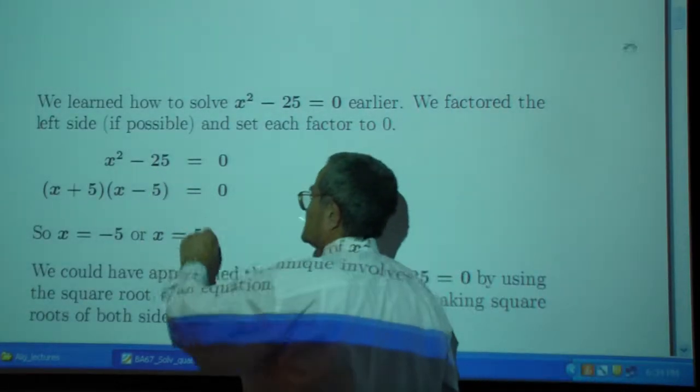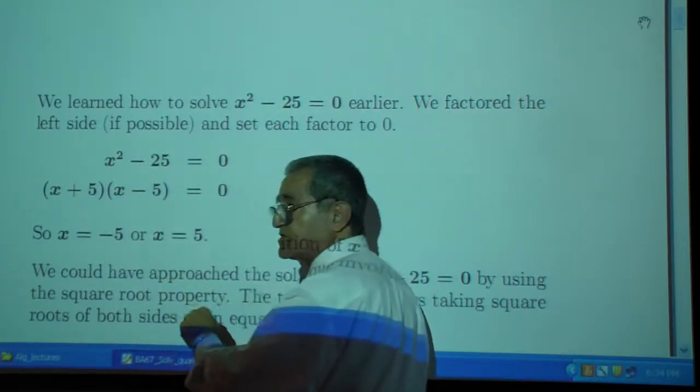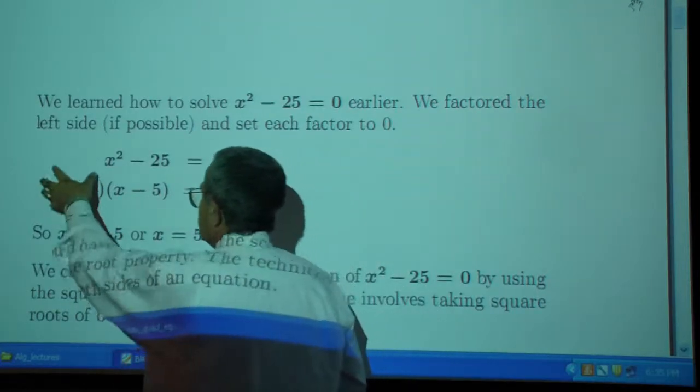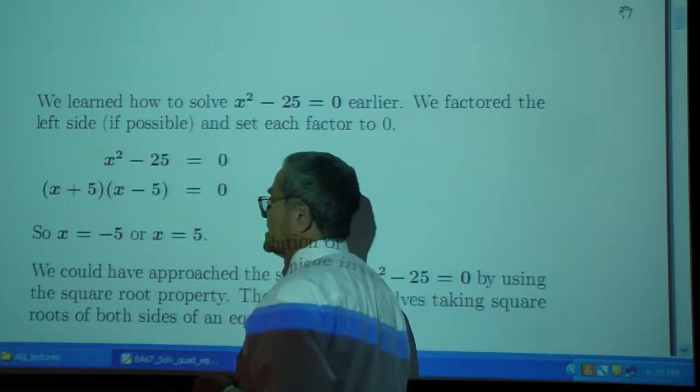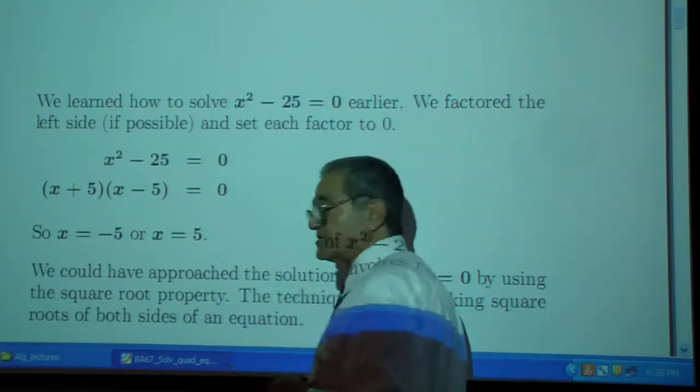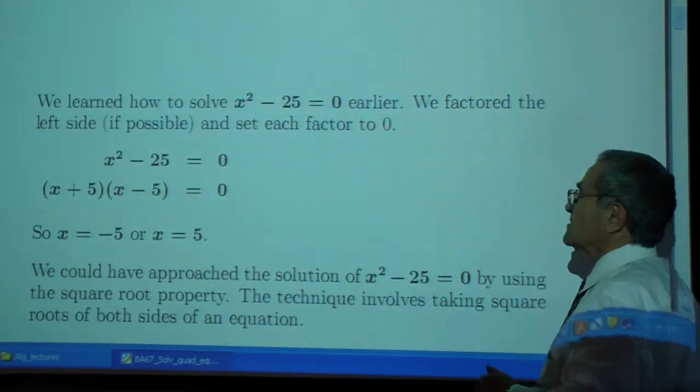So we have x squared minus 25, a squared minus b squared, which is a plus b times a minus b, which is 0. So either this factor is 0, which means x is negative 5, or x minus 5 is 0, which means x is positive 5. That's by factoring.